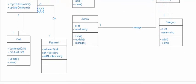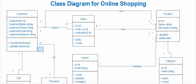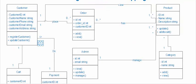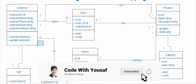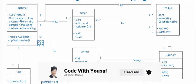That was a general class diagram for online shopping. You can add more classes like return order, address, or feedback and review for products, depending on your requirements. If you liked the video, please subscribe to our YouTube channel and share it with your friends. Thanks for watching.